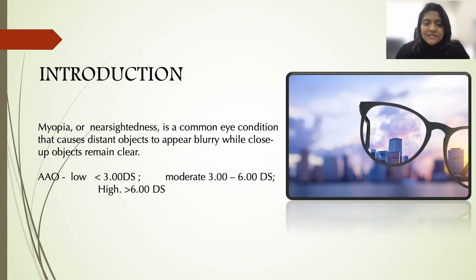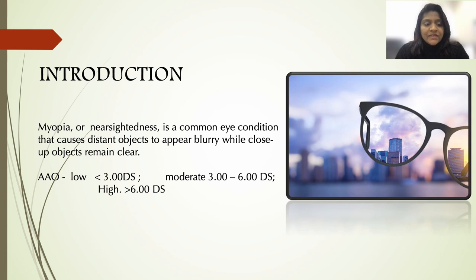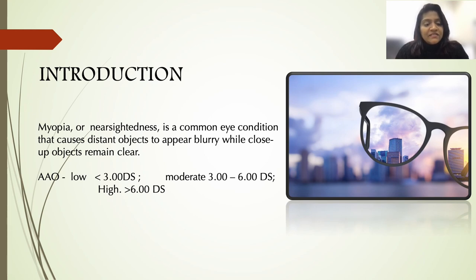Myopia, or nearsightedness, or negative refractive error, is a common eye condition which causes objects at distance to appear blurred while close-up objects remain clear. The American Academy of Ophthalmology classifies the refractive error as low if it's less than three diopters, moderate between three and six diopters, and high if it's more than six diopters.